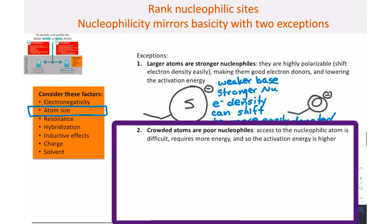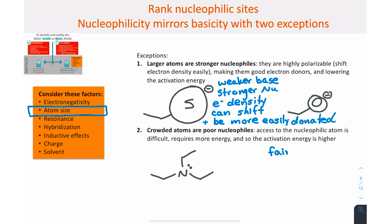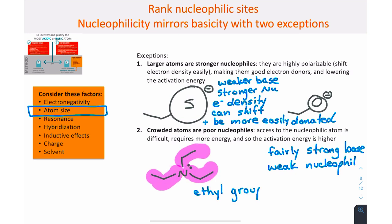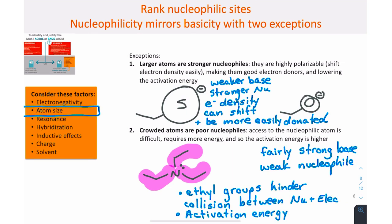Second exception, more crowded atoms are weaker nucleophiles. For example, triethylamine is fairly basic and can readily react with a small proton. However, as a nucleophile, the nitrogen's approach to the electrophilic atom is hindered by the three large ethyl groups. They block the collision between the nucleophilic and electrophilic atoms, raising the activation energy of the reaction.